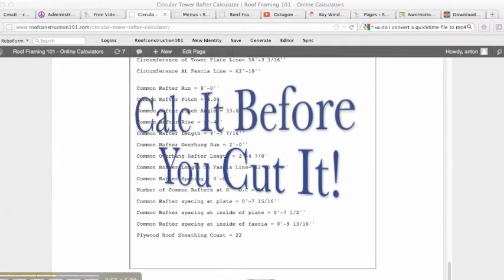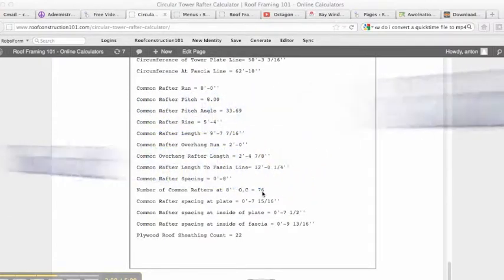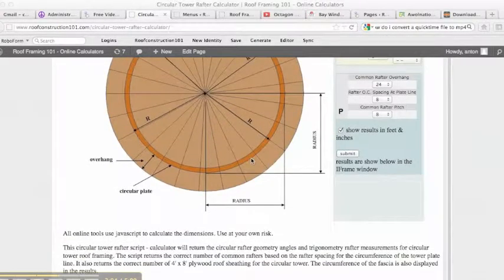The spacing is 8 inches like we said. Number of common rafters at 8 inches on center equals 76. So it tells you right there how many rafters we're going to need to go around this whole thing at 8 inches.